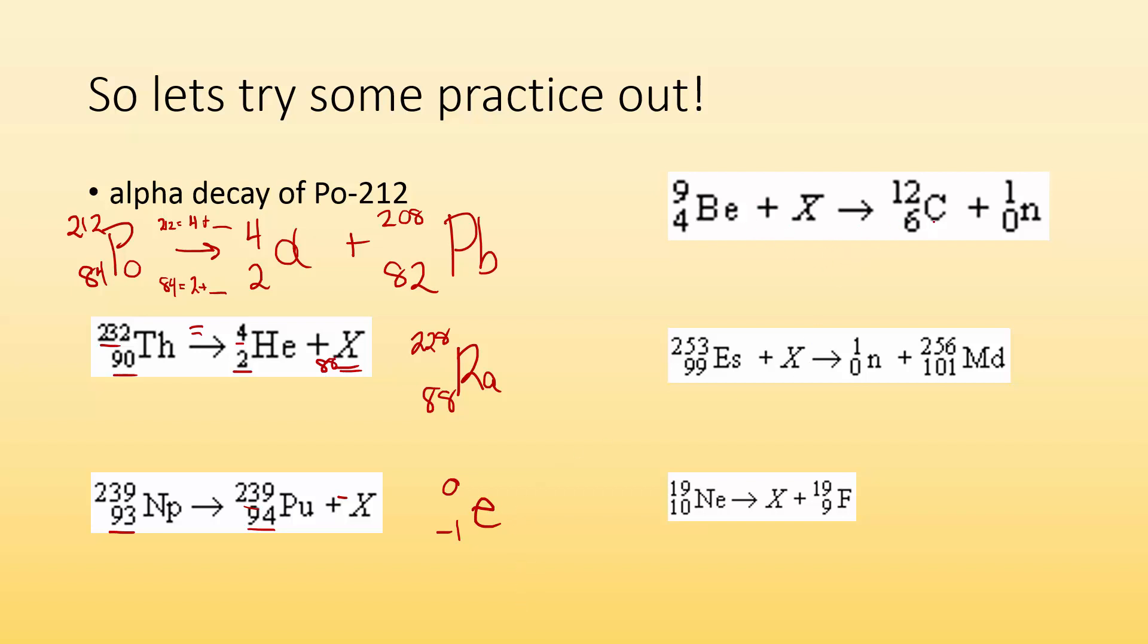Same process, but up here. Let's take a look at the charges first. I have 6 and 0, so that gives me 6 has to equal 4 and some number. That's going to have to be a 2. Let me take a look at the mass. I got 12 and 1 has to equal 9 and some number. That's going to have to be 4. So what is that with a charge of 2 and a mass of 4? That's an alpha particle.